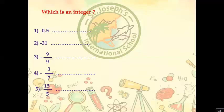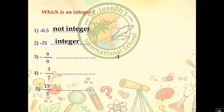Negative 31 is an integer — a negative number. Number three: negative 9 over 9. This appears to be a fraction, but negative 9 over 9 equals negative 1, and that is an integer. Number four: negative 3 over 7 — not an integer, because it is a fraction. Number five: 15 over 5. Even though it looks like a fraction, 15 divided by 5 equals 3, and 3 is an integer.